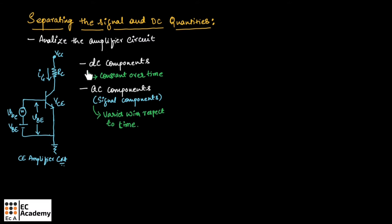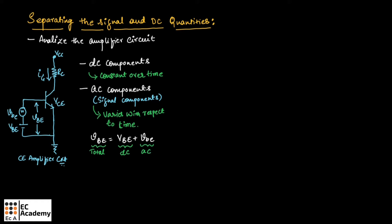So in an amplifier circuit, there are two important components: DC components and AC components. DC components are constant over time, and AC components, which are also known as signal components, will vary with respect to time. In an amplifier, the total voltage can be given as VBE is equal to capital VBE plus small VBE, where capital VBE represents the DC component and small VBE represents the AC component.